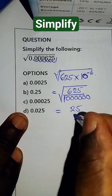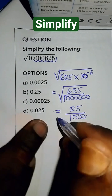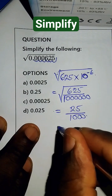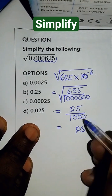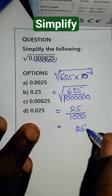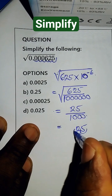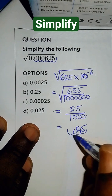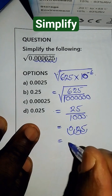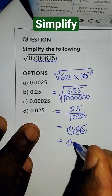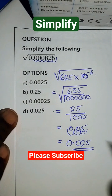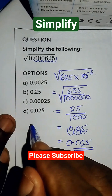The final answer becomes: the square root of 625 is 25, and the square root of 1,000,000 is 1,000. So our final answer is 25 over 1,000. We can convert it back to decimal — write 25, then move the decimal point 3 places: 1, 2, 3, because of 3 zeros. So the final answer is 0.025. Please subscribe.